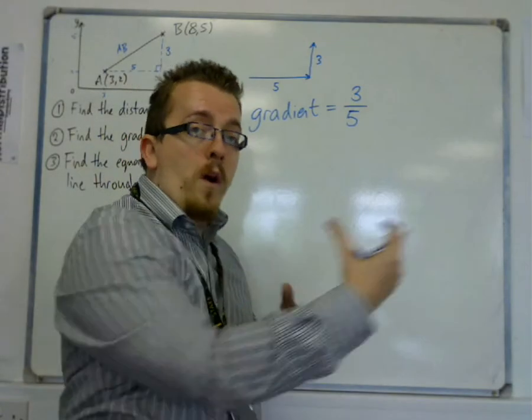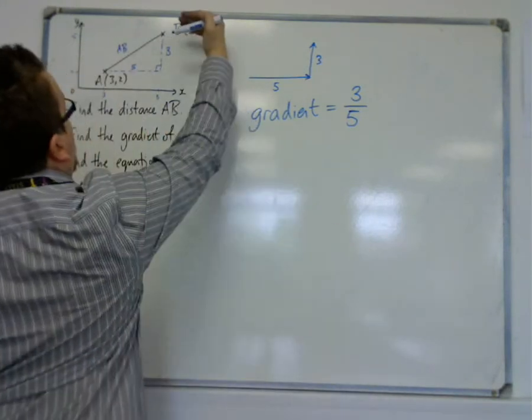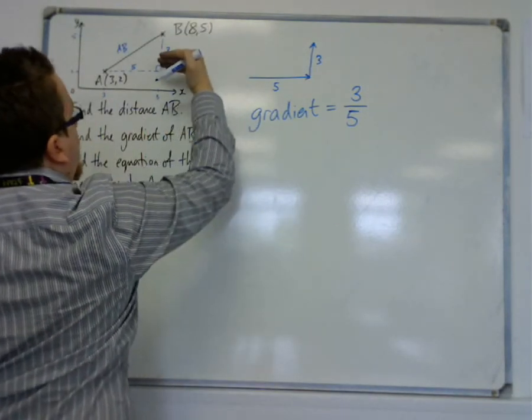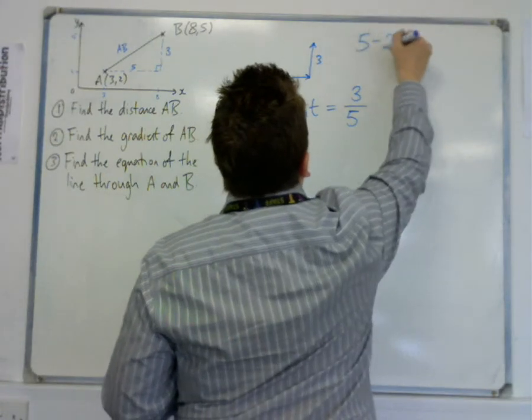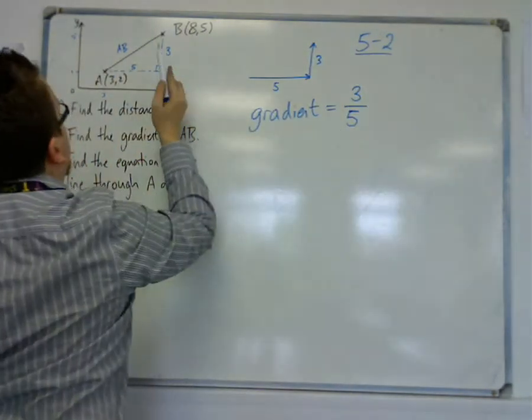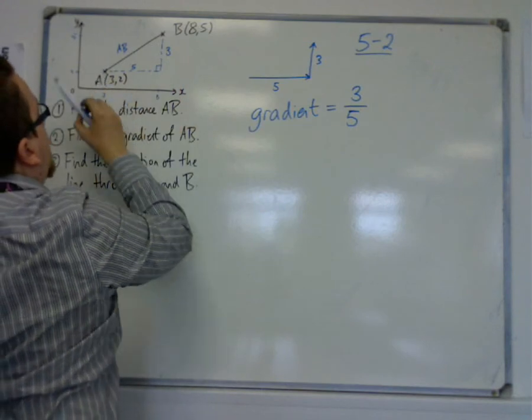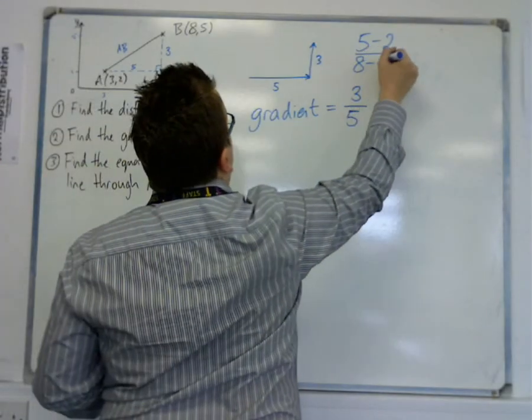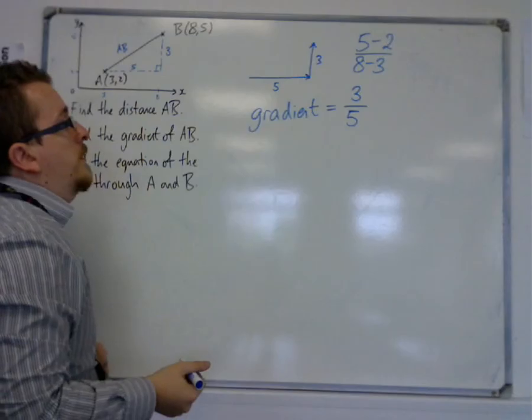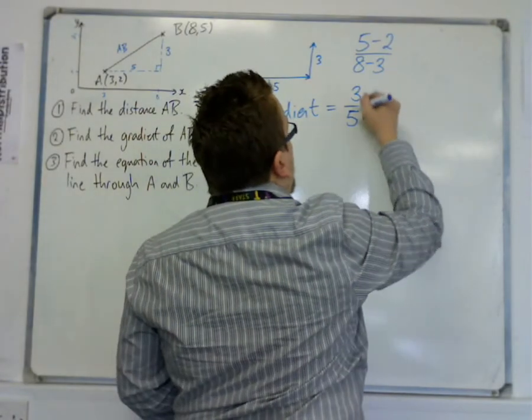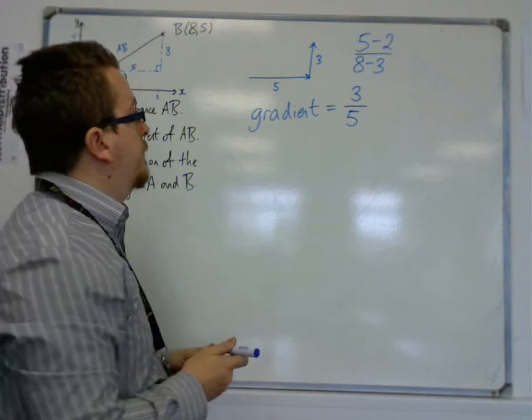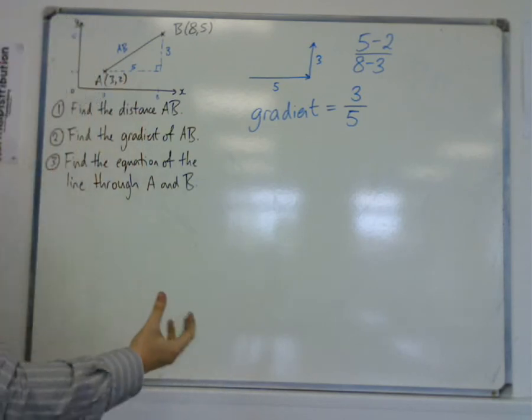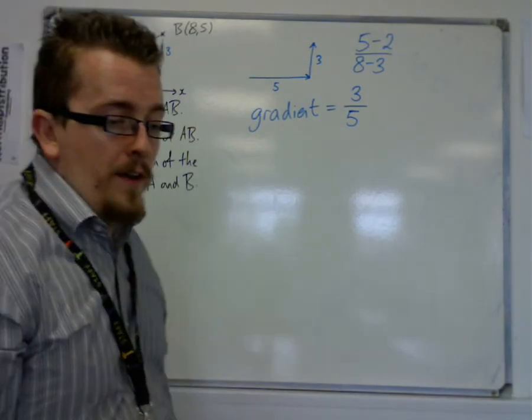So it's the difference in the y's, the difference between the five and the two. So we could write this as five minus two, divided by the difference in the x's, which was eight minus three. So 3/5 or 0.6 is the gradient of this line. And that's how you can work out the gradient of a straight line like that.